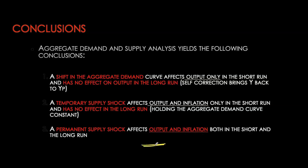That brings us to the end of this chapter. We looked at business cycle fluctuations and how the AD-AS model explains them. Next time we'll be analyzing the AD-AS model in terms of monetary policy — how autonomous monetary policy changes can be used to bring stability to the business cycle.